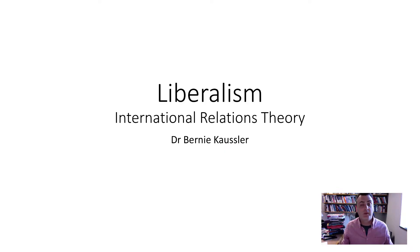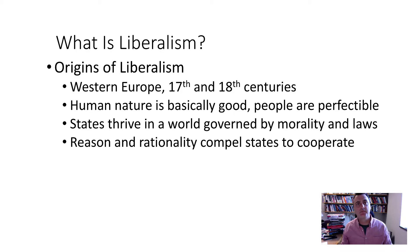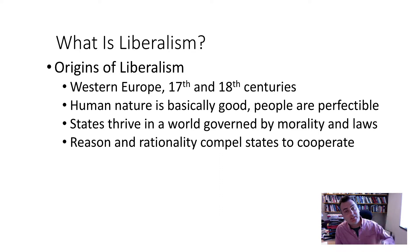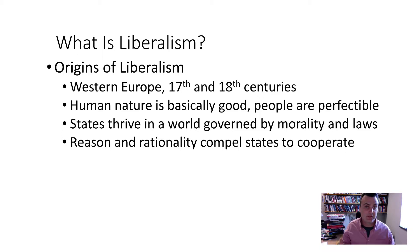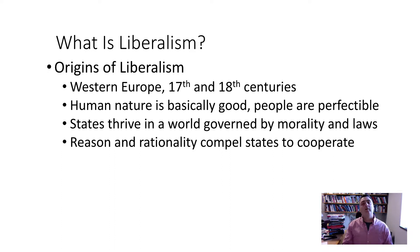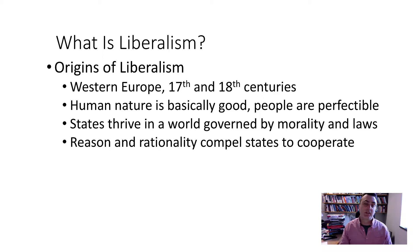This is a primer on liberal theory and how that particular lens views international relations. Unlike realism, it is a far more optimistic lens. The origins are in 17th and 18th century Europe, with Immanuel Kant being one of the most important thinkers. The premise is that human nature is basically good — people are perfectible. We have unlearned horrendous practices like slavery, incest, and dueling. Humans do evolve and progress, and can unlearn violent behavior. States thrive in a world governed by morality, laws, reason, and rationality — concepts which compel states to cooperate.